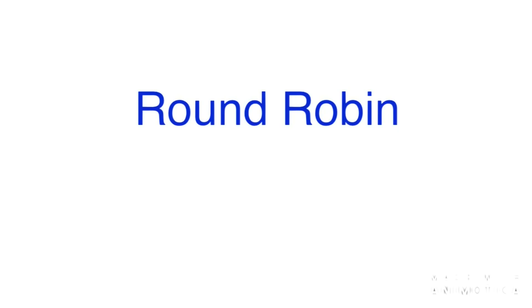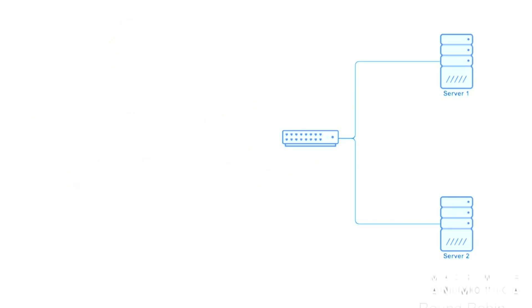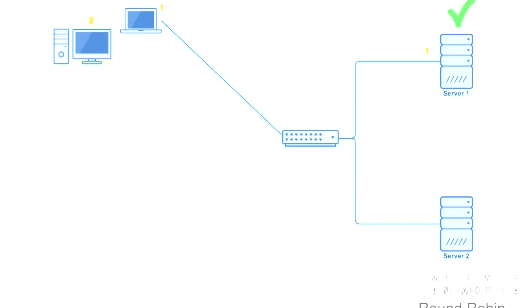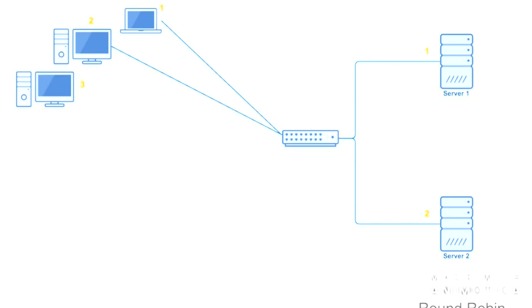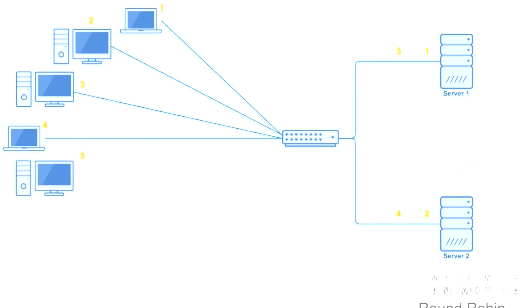Now let's look at the round robin algorithm visually. We have one load balancer and two servers — server one and server two. The first request goes to server one, second to server two, third to server one, fourth to server two, five to one, six to two — and the process continues. This works well when both servers are of equal size and capacity.